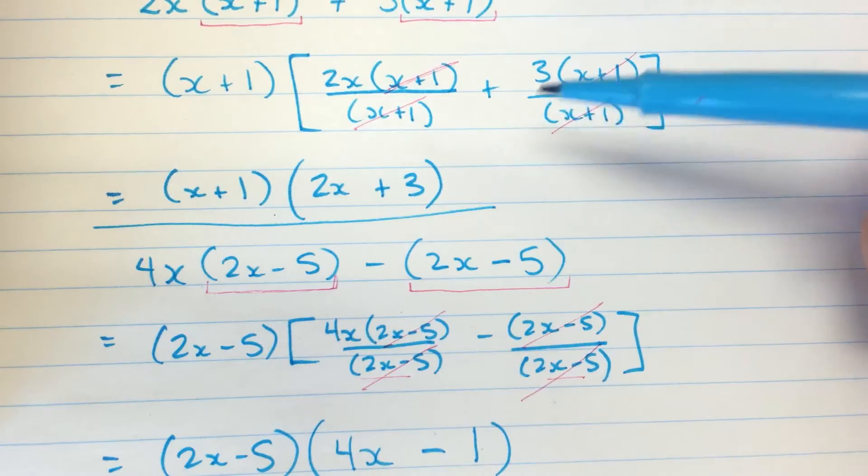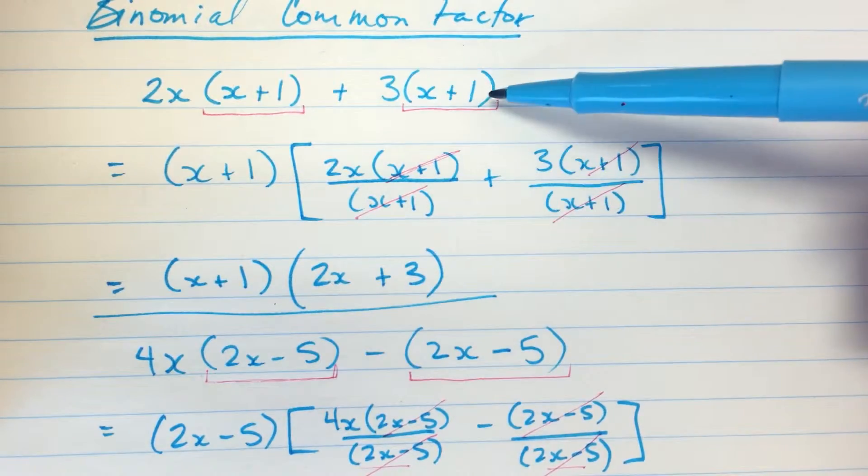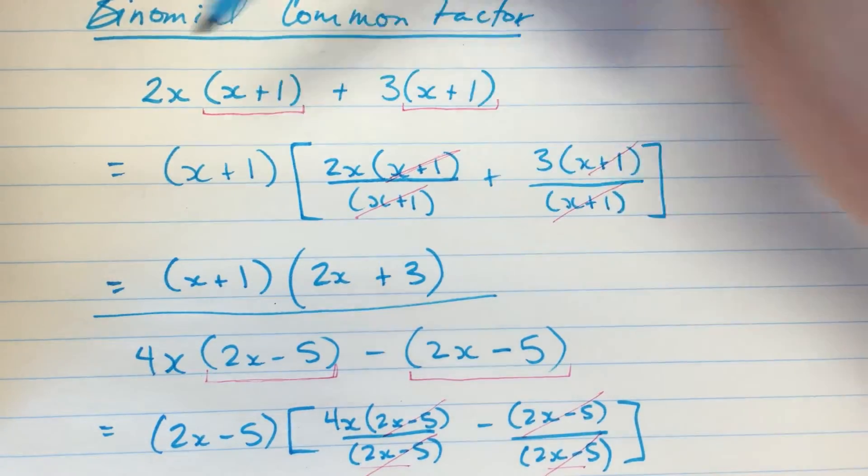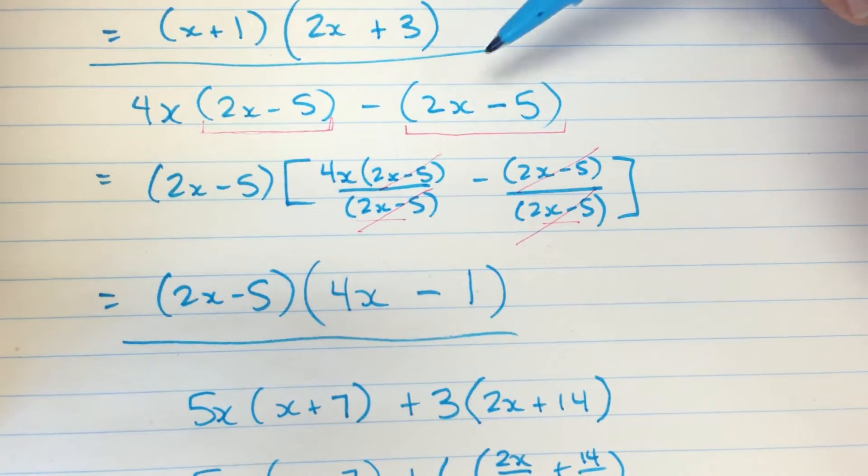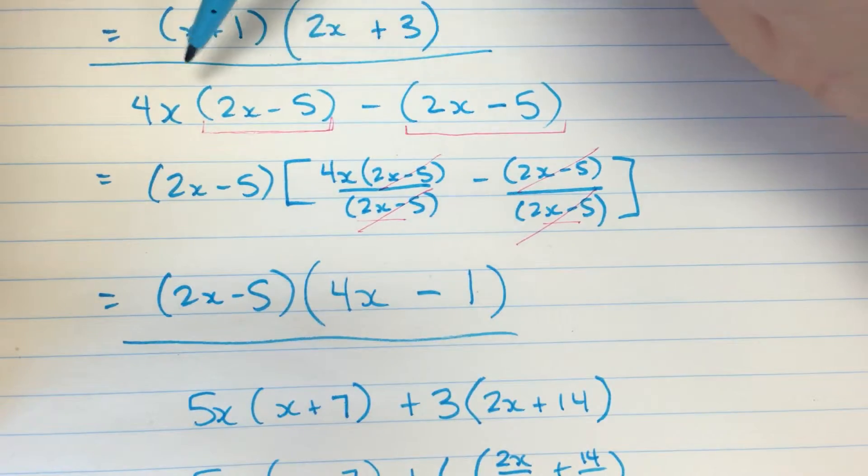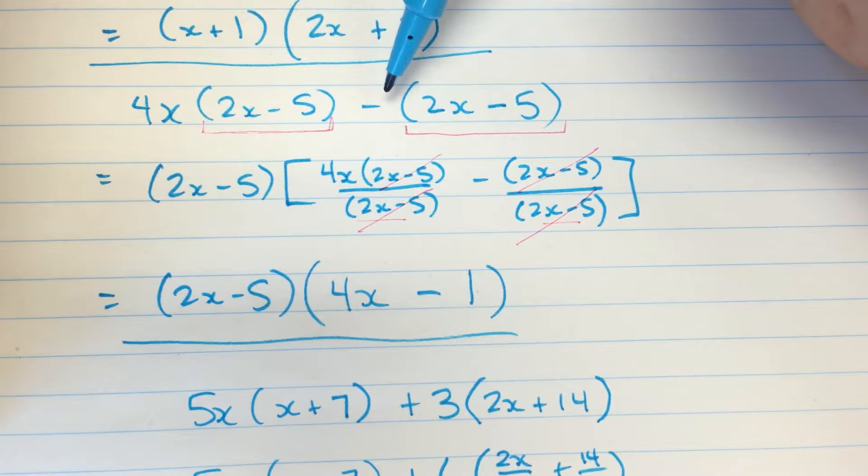Okay, so we've done three examples now. We factored out an x plus 1, and we're left with 2x plus 3. Here we factored out 2x minus 5, and we're left with 4x minus 1.